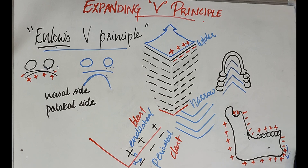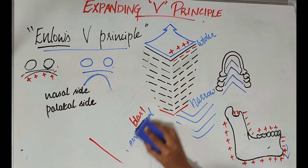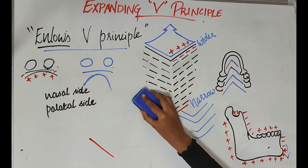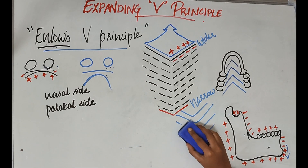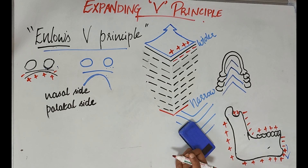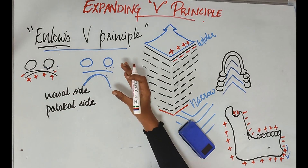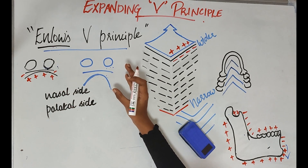This is the most accepted principle, whereas Enlow's counterpart principle is one which is not accepted, which we will see later. We have examples that show Enlow's V principle, and the best example is the palate.